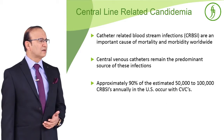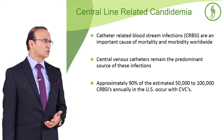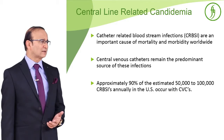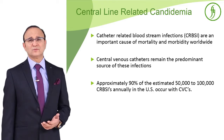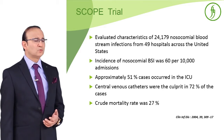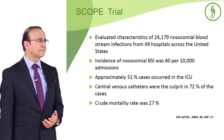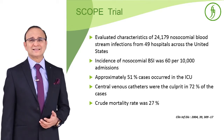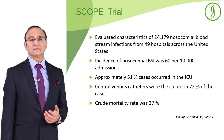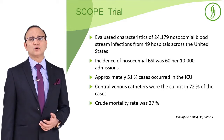Catheter related bloodstream infections are an important cause of mortality as well as morbidity, and they remain the predominant source of these infections. Approximately 90 percent of the estimated 50,000 to 100,000 CRBSIs annually in the US occur with central venous catheters. In the SCOPE trial, which evaluated characteristics of 24,179 bloodstream infections from 49 hospitals across the United States, the incidence of bloodstream infection was 60 per 10,000 admissions, and 51 percent occurred in the ICU. Central venous catheter was the culprit in 72 percent of cases, and crude mortality was 27 percent.